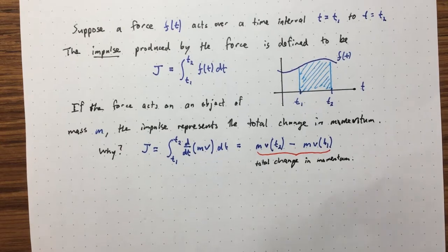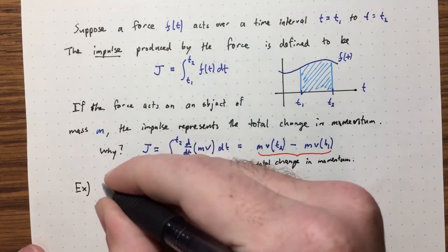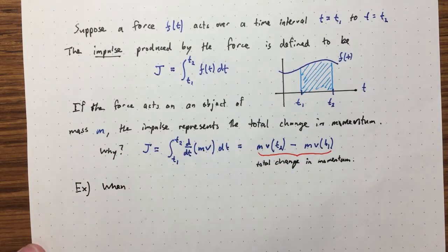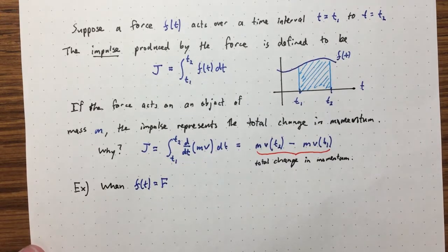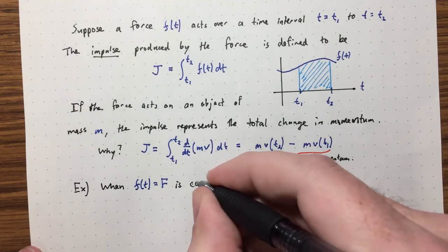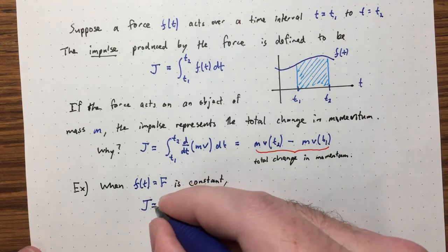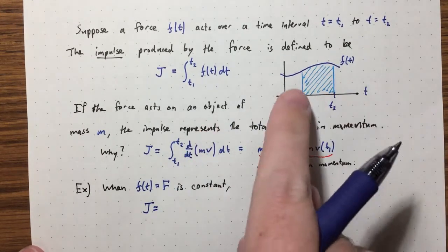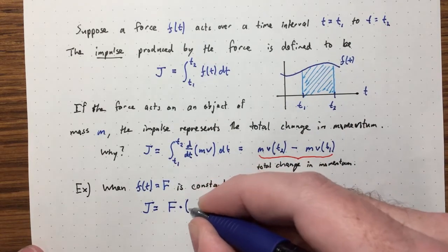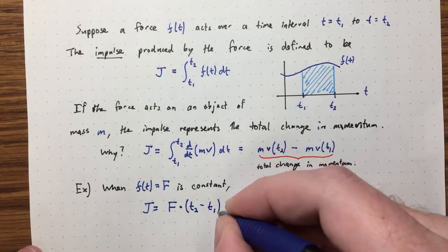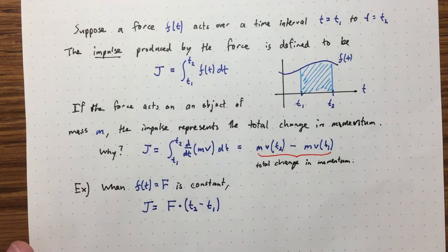Let's do an example of calculating an impulse, starting with a simple case: when f(t) is constant f. We're integrating a constant from t1 to t2, so the impulse is just f times the length of the interval, t2 minus t1. This follows from geometry or the fundamental theorem of calculus.